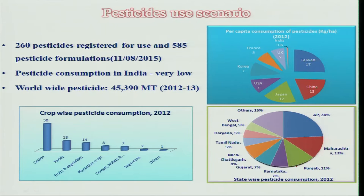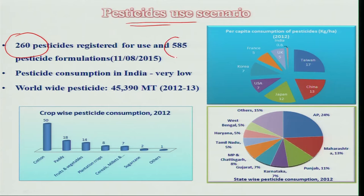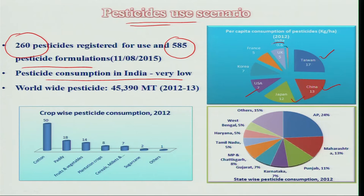If you understand pesticide usage across the globe, so far 260 pesticides have been registered and around 585 formulations are available as of August 2015. Pesticide consumption in India is very low compared to some countries abroad. Taiwan records almost 17 kg of pesticide per hectare, followed by China, Japan, and USA, whereas India consumes hardly 0.6 kg per hectare. However, in irrigated areas — particularly rice and cotton growing areas — pesticide consumption is almost 10 kg per hectare.